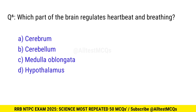Question 6. Which part of the brain regulates heartbeat and breathing? Right option is C, medulla oblongata.